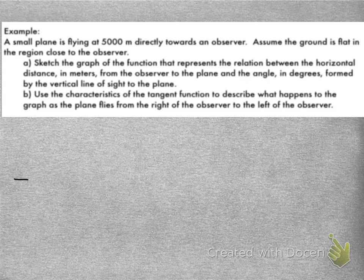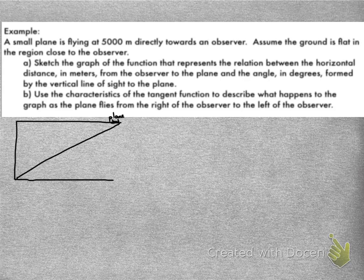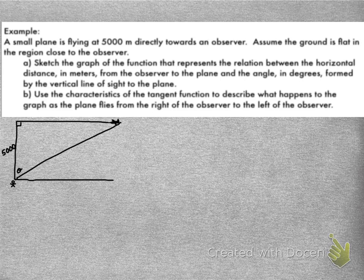So if we drew this as a picture, there's our triangle, there's our little plane. We're 5,000 meters above, and the distance that the plane is away from us, horizontally, we call that d. There's the ground, and as the plane gets closer, d is going to decrease. As d decreases,